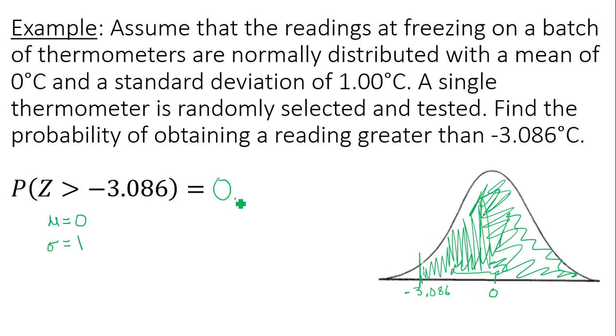So 0.9990, if you want to show the zero at the end to indicate you rounded to four decimal places, that's perfectly fine. Thanks for watching.